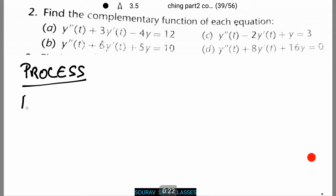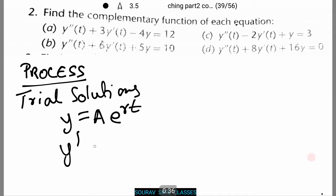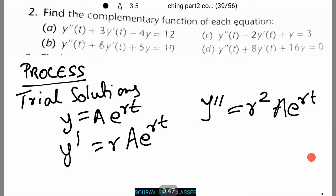We adopt trial solutions. That is, we assume y equals Ae to the power rt, therefore y dash equals rAe to the power rt, and y double dash equals r squared Ae to the power rt.